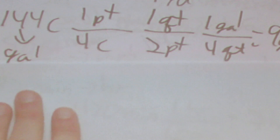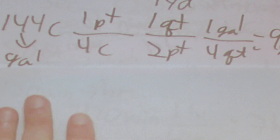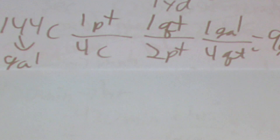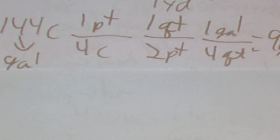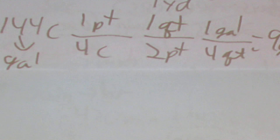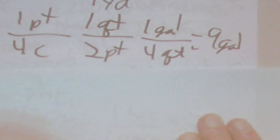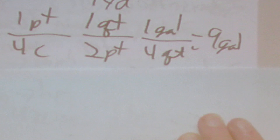Next you'll have something like 144 cups that need to go to gallons. We set it up as 1 pint over 4 cups, then 1 quart over 2 pints, then 1 gallon over 4 quarts. When we do that we get 9 gallons — basically we're dividing cups by 16.